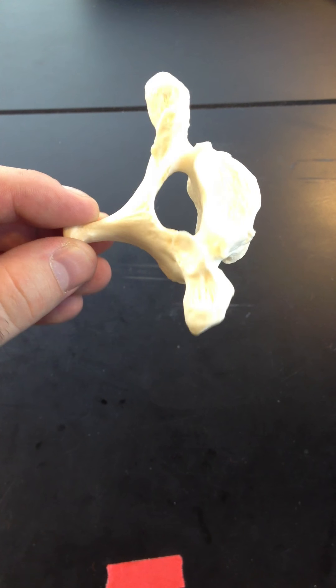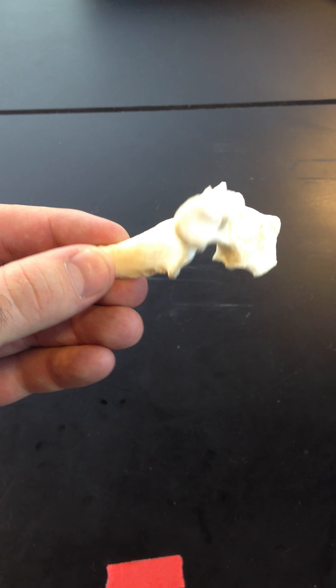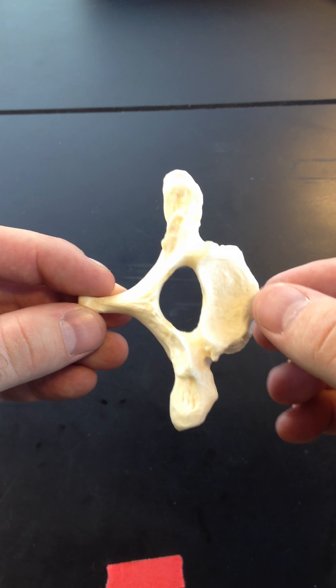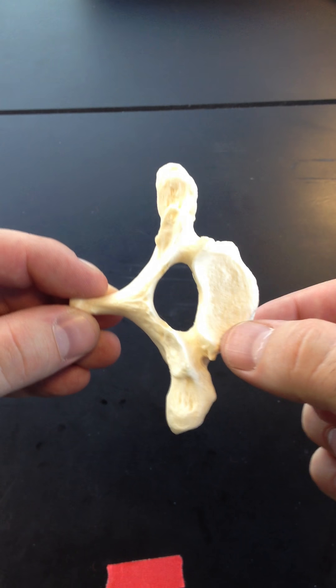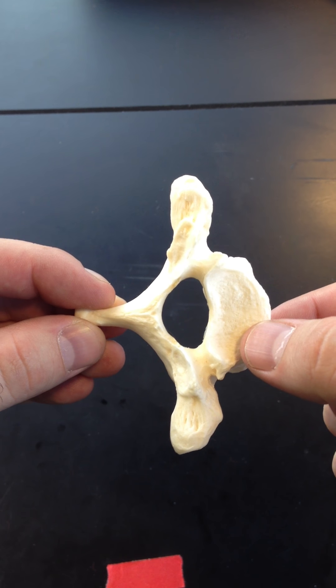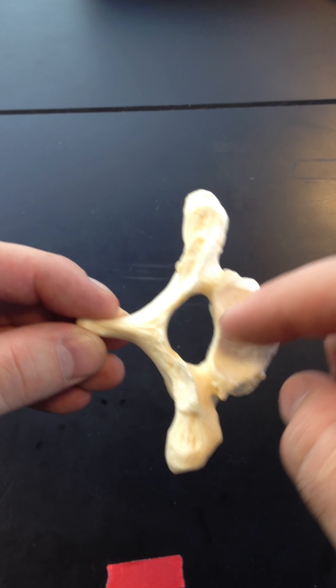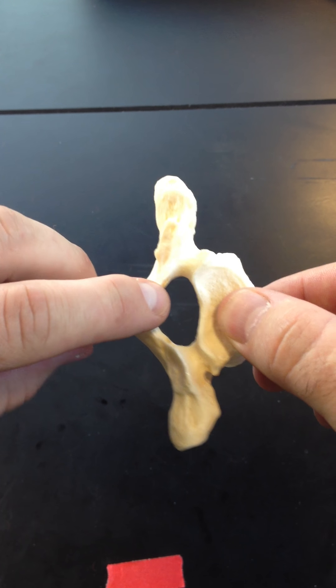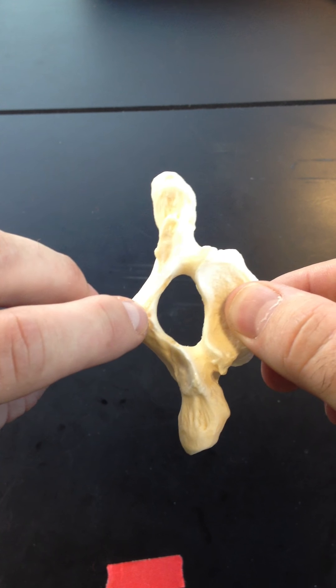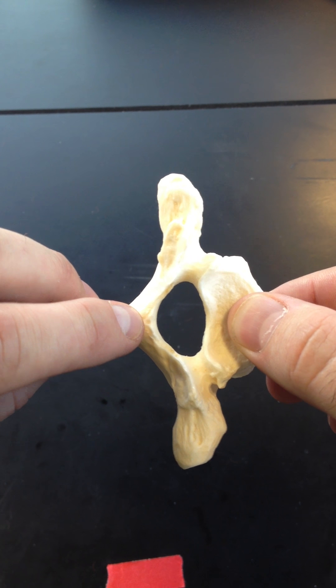All right, so now we're moving on to the thoracic region of the vertebral column. First thing you'll notice is that the body is bigger than that of the cervical region, and it's got a different shape. It's a little bit more oval shape now. The vertebral foramen is getting a little bit bigger. Its shape has also changed.